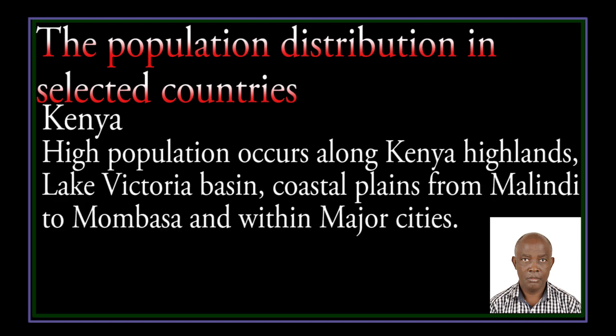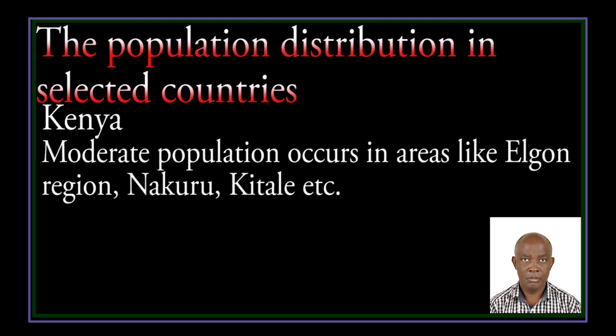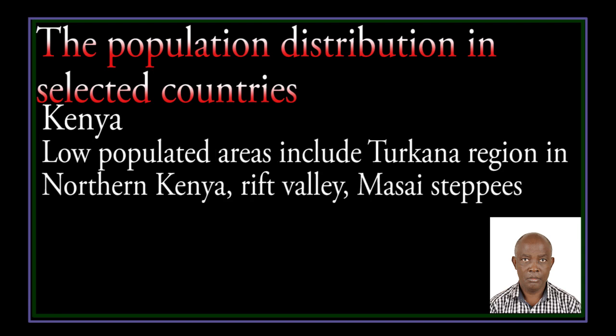In Kenya, high population occurs along the Kenya Highlands, the Lake Victoria Basin, coastal plains from Malindi to Mombasa, and within major cities. Moderate population occurs in areas like the Rift Valley area, Nakuru, Kitale, and so on. Low populated areas include the Turkana region in northern Kenya and the Rift Valley.